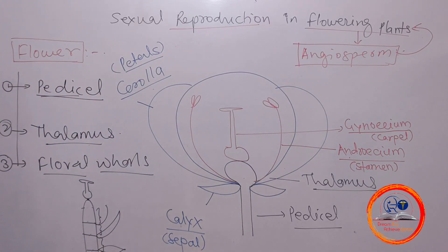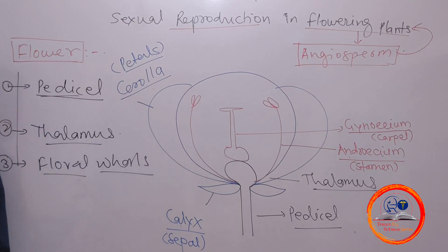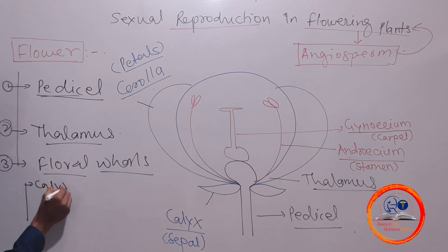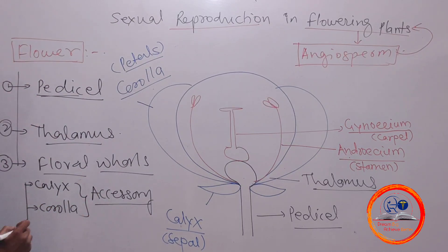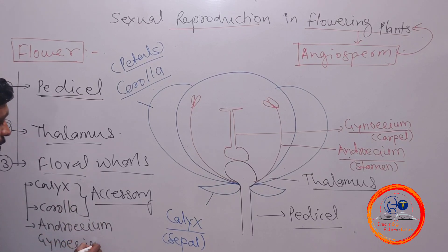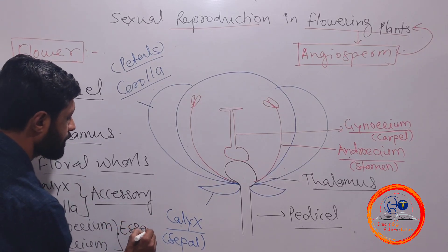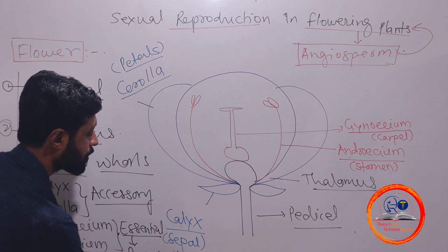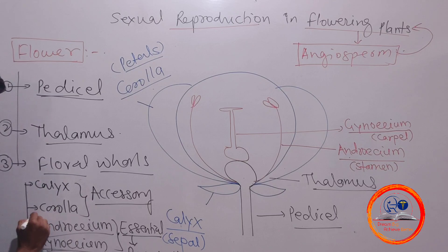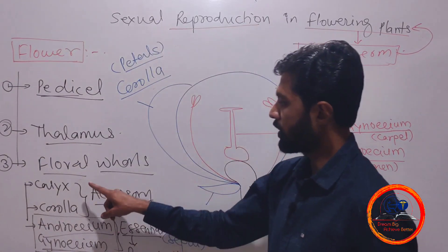Among the four floral whorls, two are considered essential and two are called non-essential. The outer two — calyx and corolla — are considered accessory floral whorls. The androecium and gynoecium are considered essential floral whorls, also called reproductive floral whorls, because they actually take part in sexual reproduction.